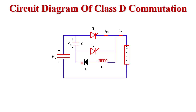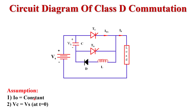Now I will explain the operation of Class D commutation. To easily understand the operation, we take two assumptions. The first assumption is that the load current is constant — meaning the output current across the load is always constant. The second assumption is that the capacitor is initially charged with supply voltage Vs. By taking these two assumptions, we can easily understand the working of Class D commutation.